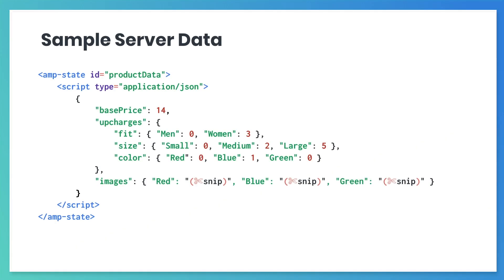Here's the data we'll use in this exercise. The ID of the AMP state component is product data. So for example, to get the base price for an item, you'd use product data dot base price. We've also got some customization options and how much each of them raises the item's price, which is called an upcharge. For example, product data dot upcharges dot size dot medium is the upcharge for a medium t-shirt. To get the shirt's final price, just add that upcharge to the base price.